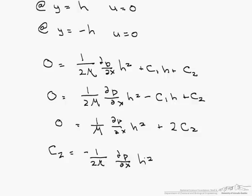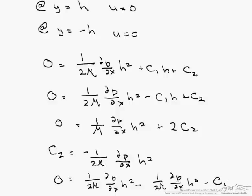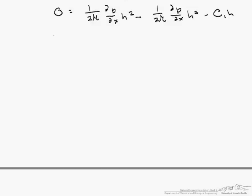Now to solve for c1, we just put our expression for c2 into either one of the expression. So 0 equals 1 over 2 mu dp/dx h squared minus 1 over 2 mu dp/dx h squared minus c1 times h. And what that shows us is that c1 equals 0.